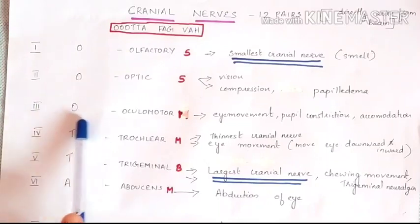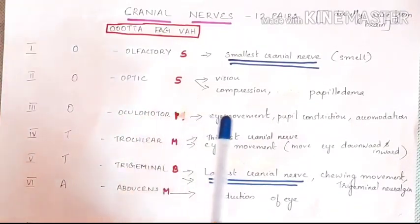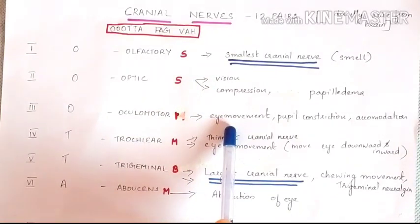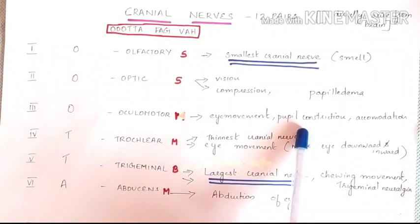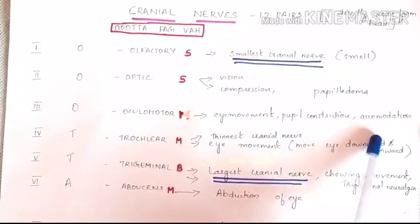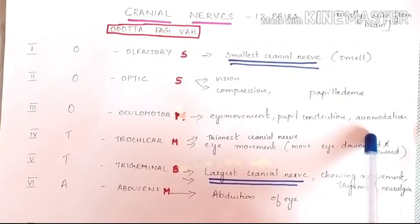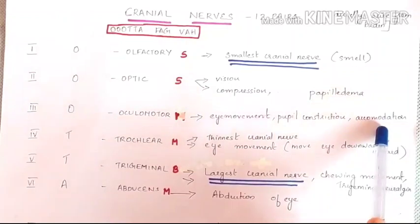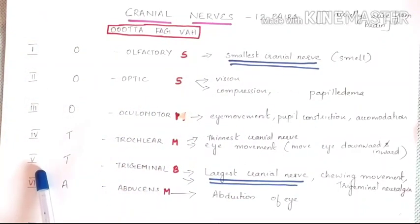The third cranial nerve is the oculomotor nerve. As the name suggests, it is a motor nerve and helps in eyelid and eyeball movement. It also enables pupillary constriction and accommodation reflex — at rest the lens is thin for focusing on far objects, but the lens must thicken to focus on near objects, a process dependent on the oculomotor nerve.